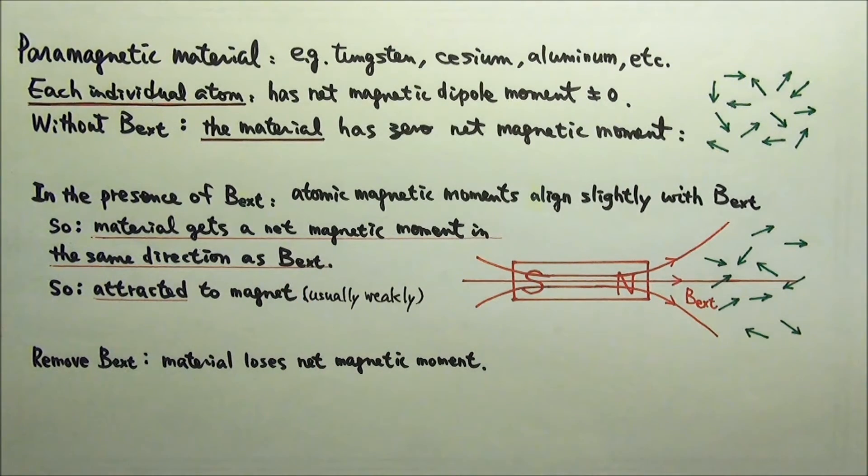Therefore, a paramagnetic material is magnetically attracted to a magnet. This attraction is usually weak and not easily observable because the random motion of the particles causes the magnetic dipole moments of individual atoms to be mostly randomly oriented.